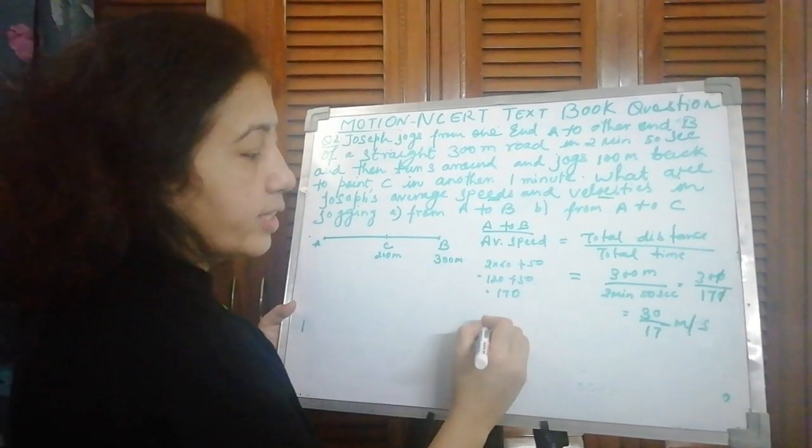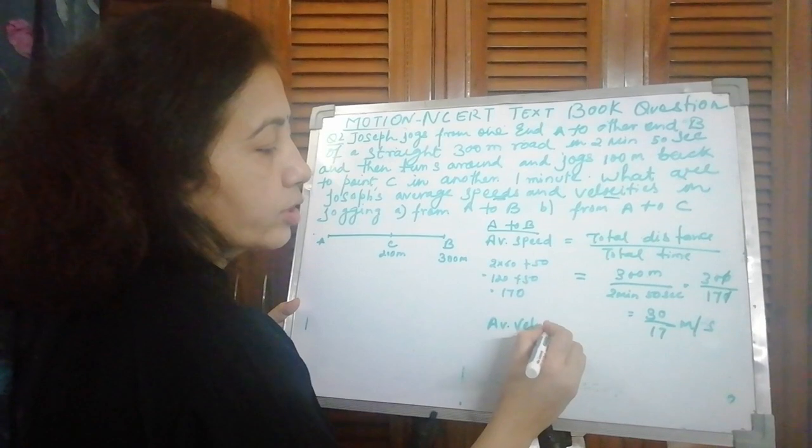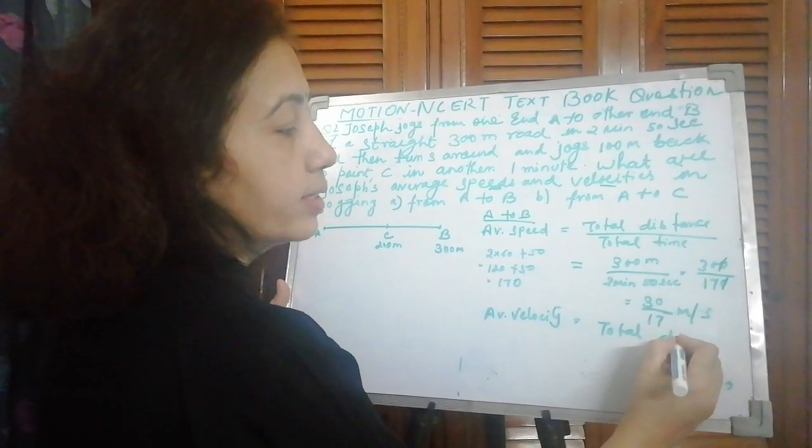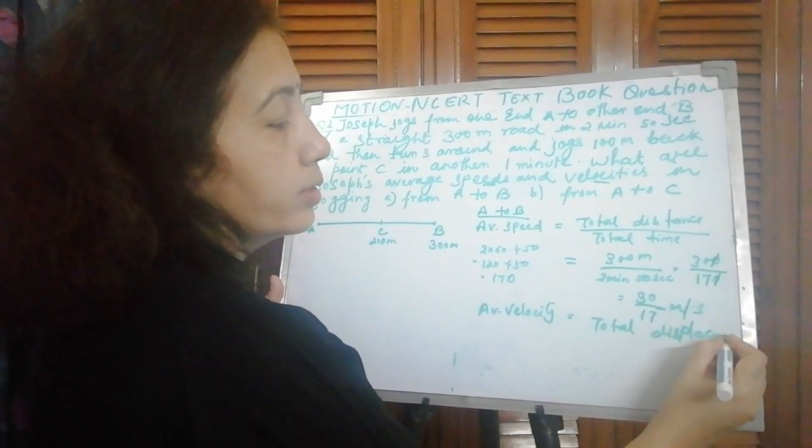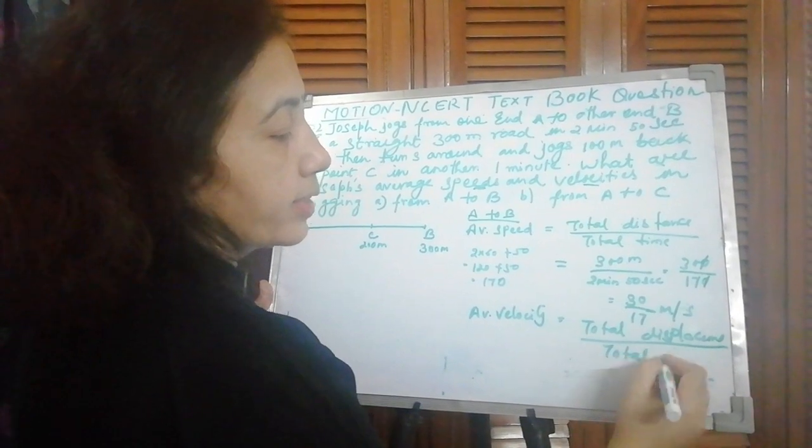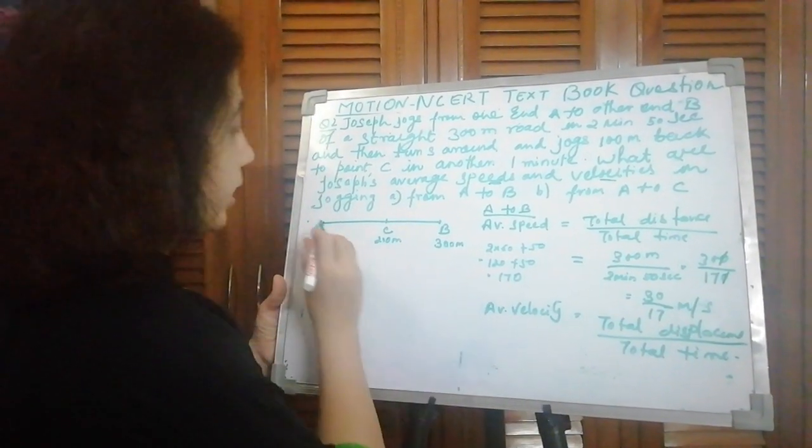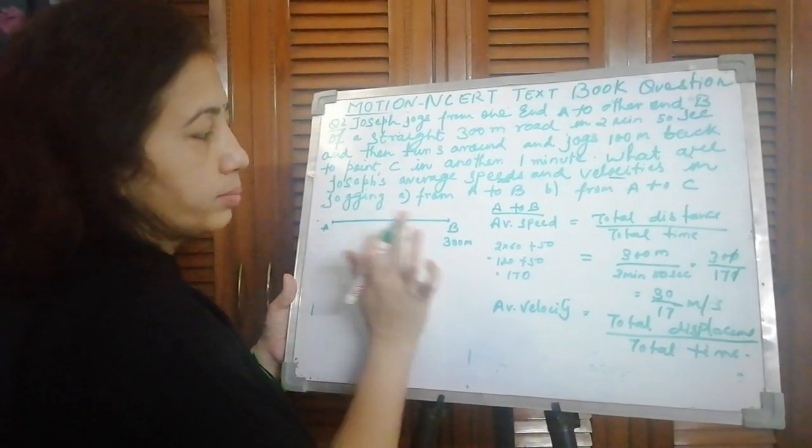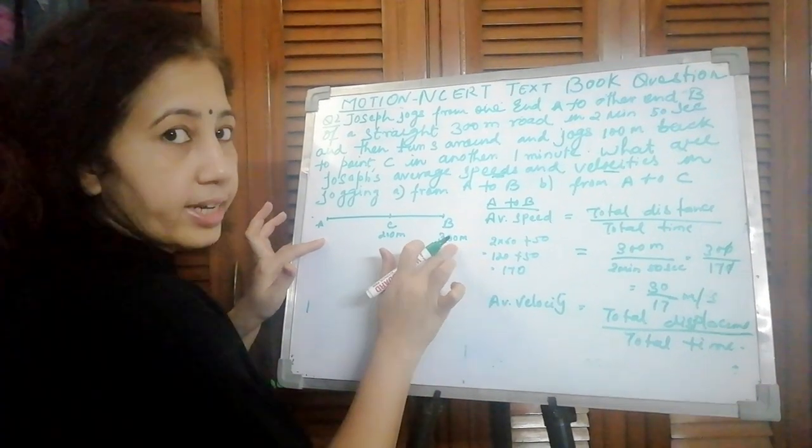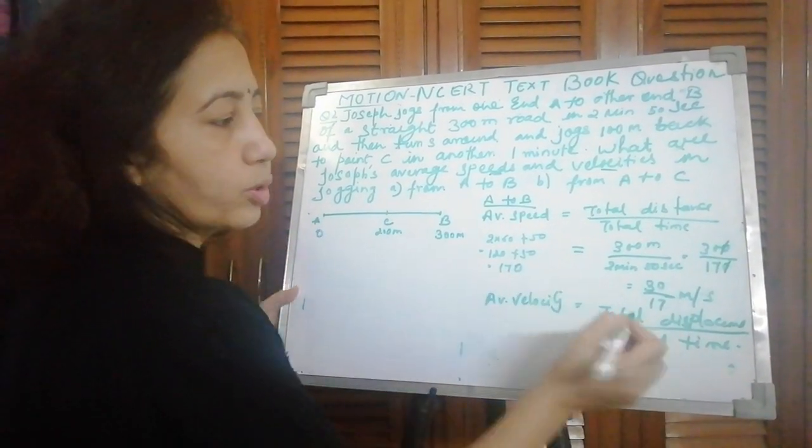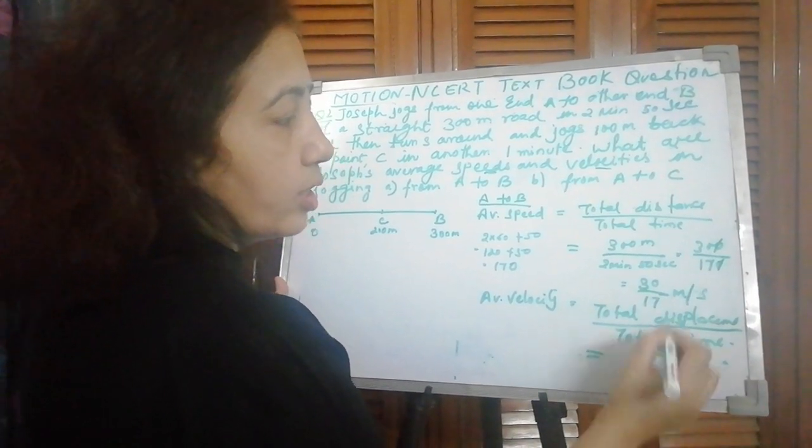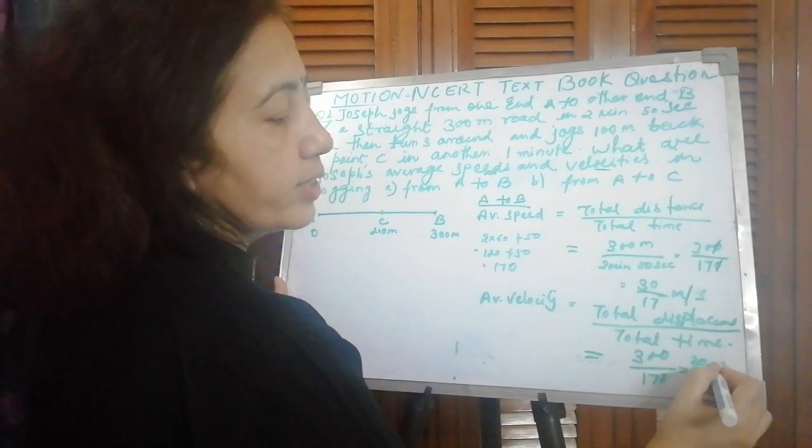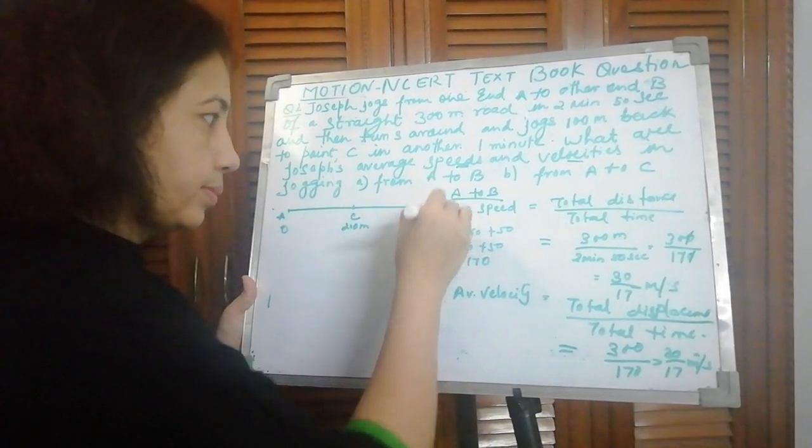Now average velocity. Average velocity: he started from A and reached 300 meters at B. So displacement in this case is 300. And time is 170. So this also comes to 30 upon 17 meter per second.